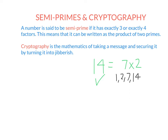Another example of a semi-prime is 25. It can be written as 5 times 5, which is a prime number times a prime number. The factors of 25 are just 1, 5, and 25. It has exactly three factors and therefore is semi-prime.